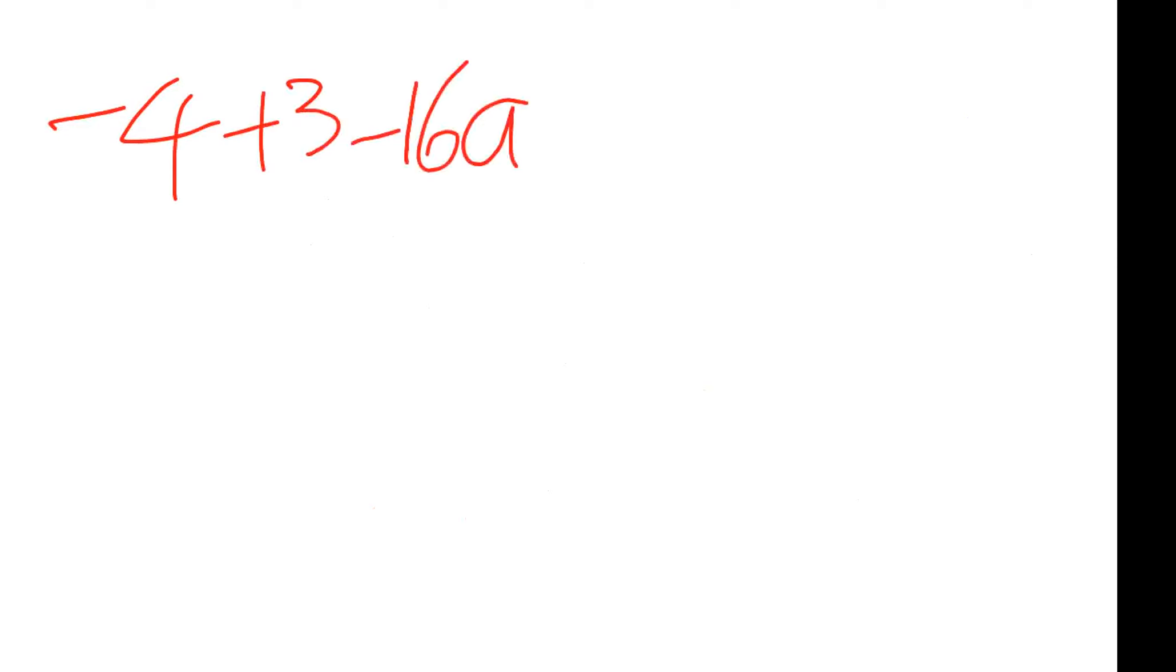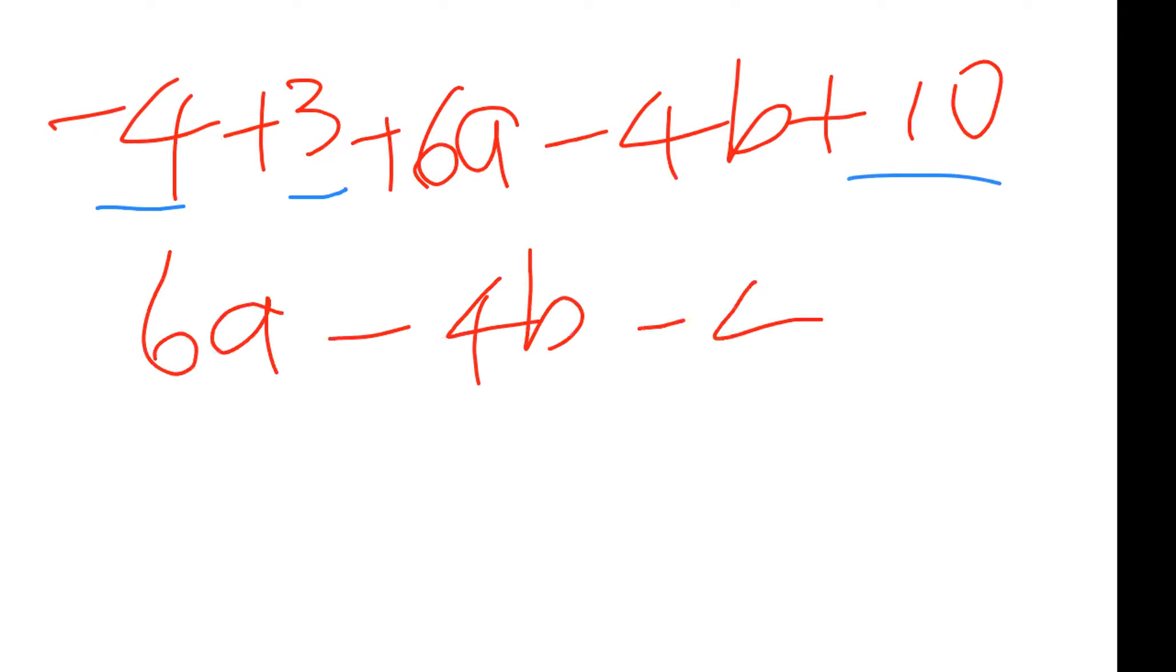And for our final question, negative 4 plus 3 plus 6a minus 4b plus 10. What do you do? Put the like terms together. What are the like terms then? Negative 4, positive 3, positive 10. 6a, oh this was a plus 6a in the question. 6a and negative 4b. They are not like terms so don't try to add them. They stay 6a minus 4b. Put everything else together.